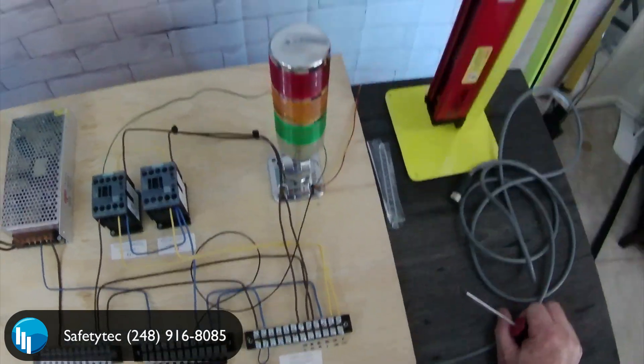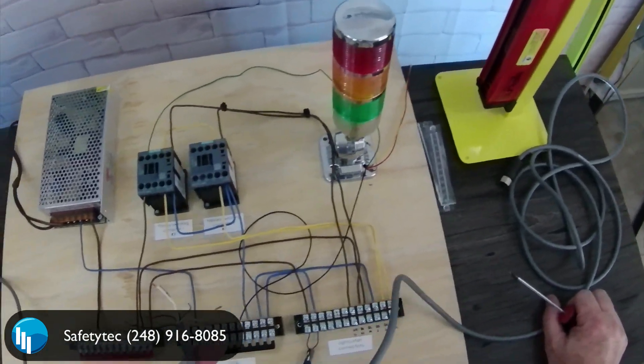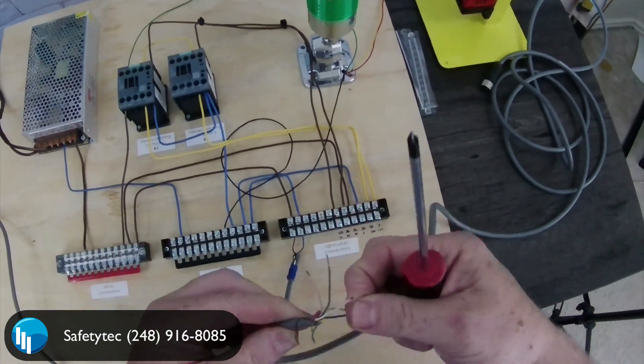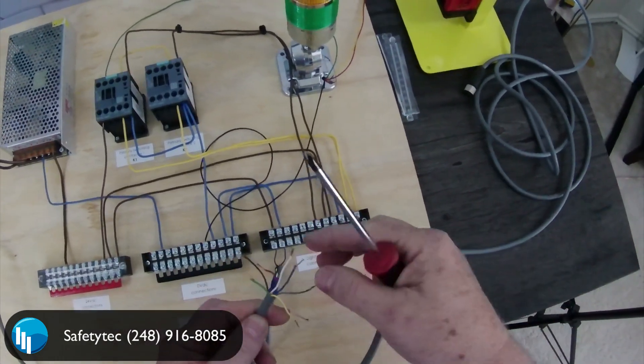Now, you can, if you want to, tie it into a safety PLC or a safety relay or some other controller if you want to, but it doesn't need it. That's one of the reasons why it's so easy to use, to install, to wire up—because there's no reason for anything else. It's just five wires... eight wires, I'm sorry.